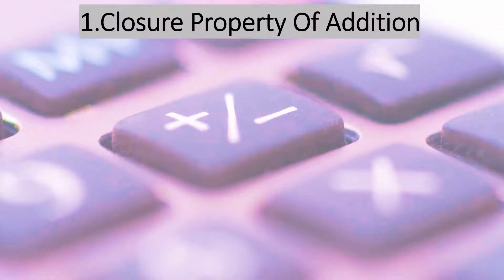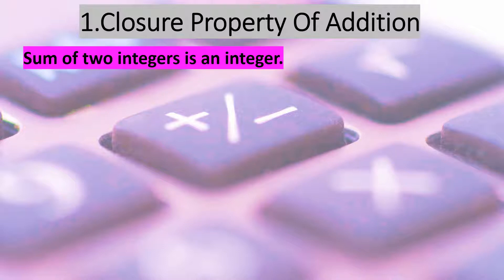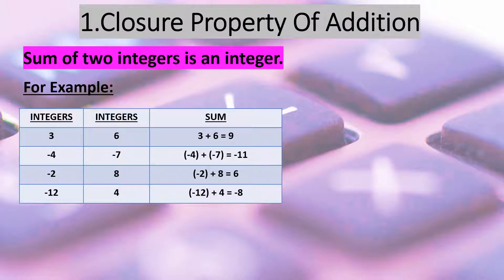Let's discuss the first property, closure property of addition. It states that the sum of two integers is always an integer. Let us understand this property through example. Look at this table.